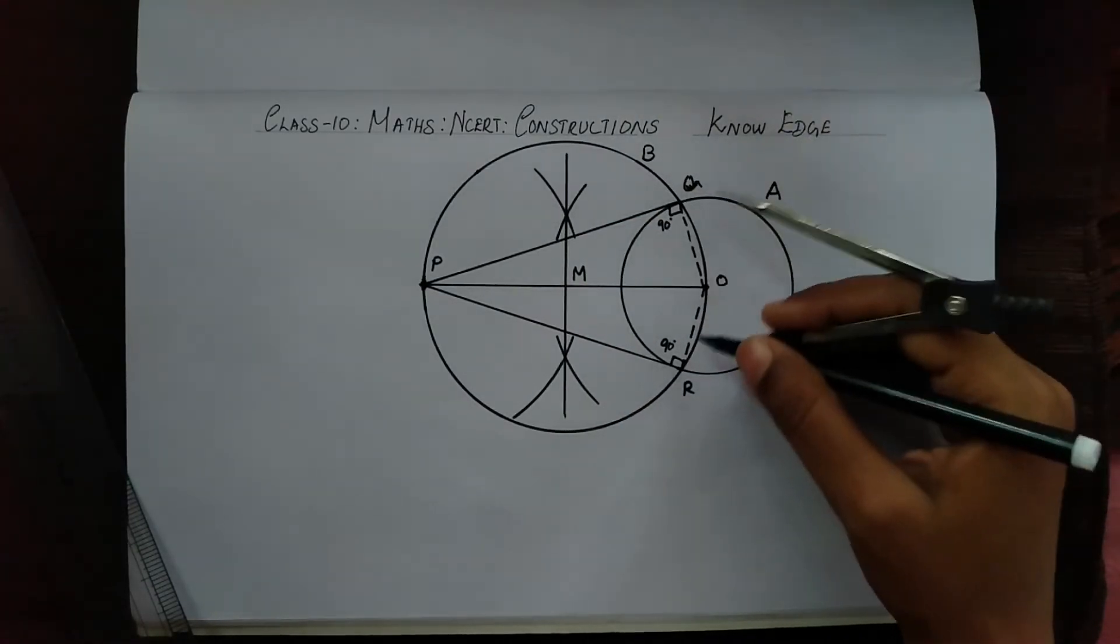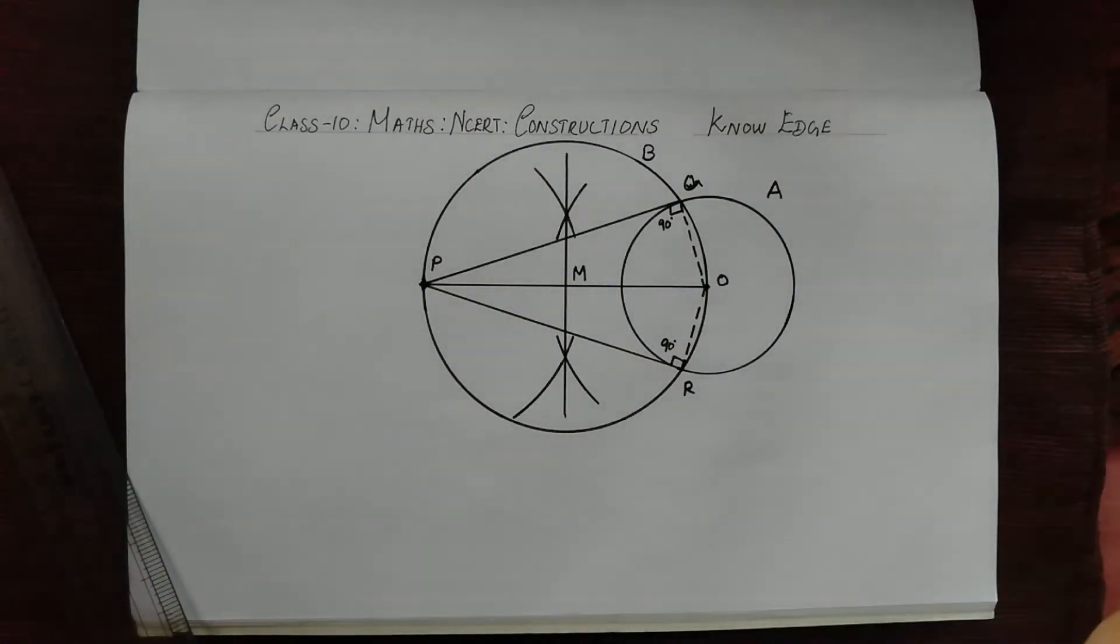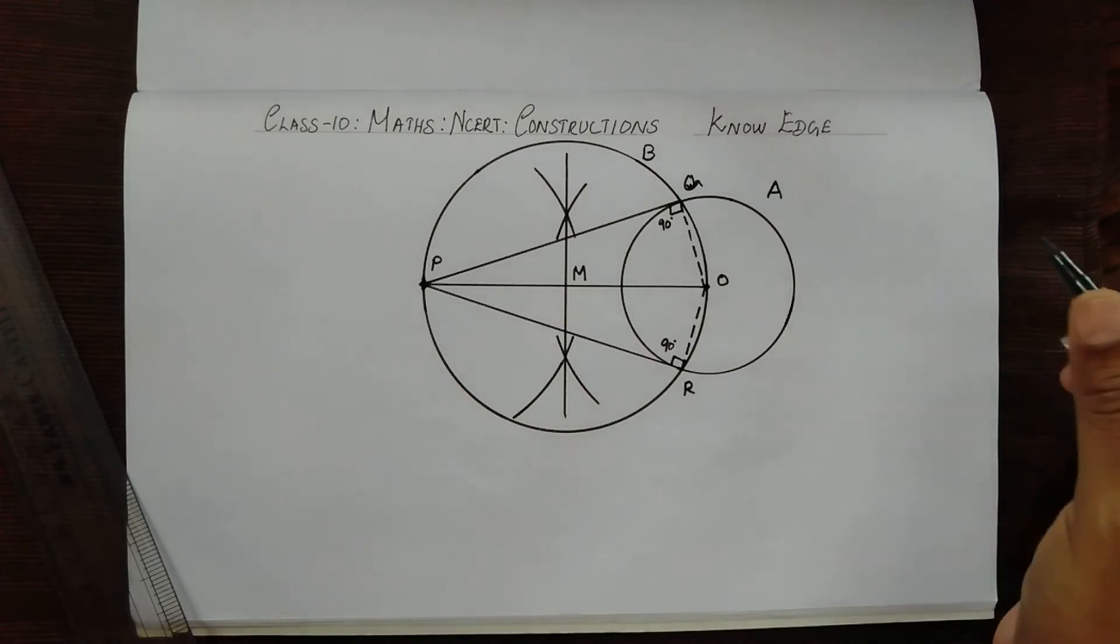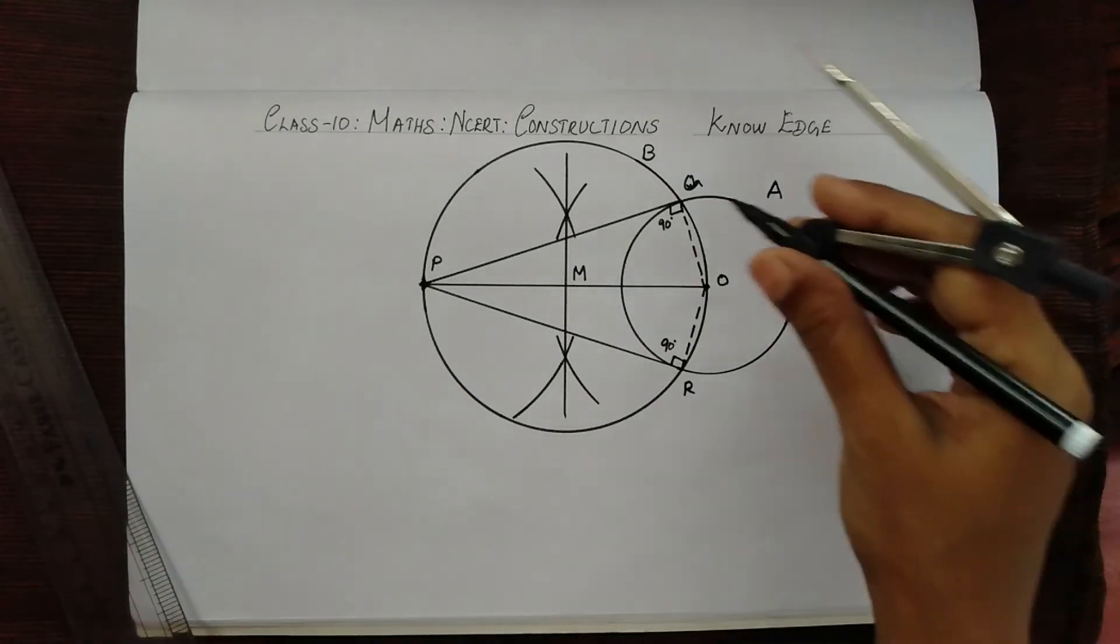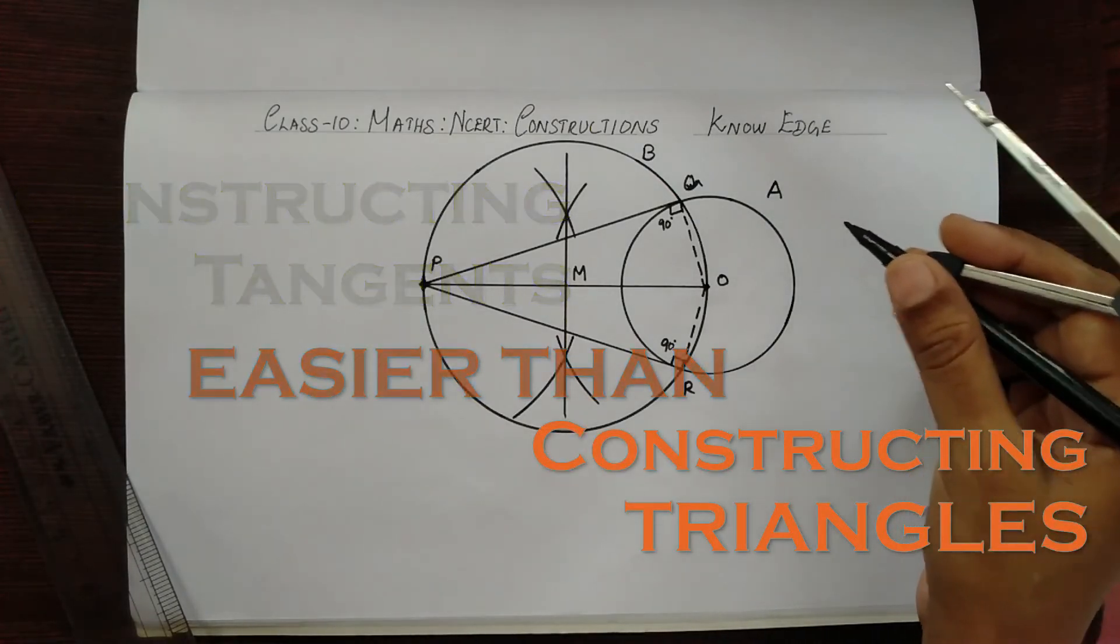I hope you understood well. This chapter on Constructions has two parts: one is constructing a triangle and the other is constructing tangents. I believe that constructing tangents is much easier than constructing triangles, so practice well because one question from this chapter is sure to be asked.